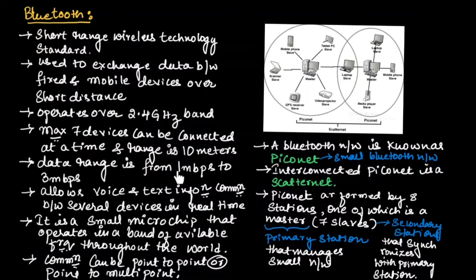The data rate of Bluetooth ranges from 1 Mbps to 3 Mbps. It allows voice and text information communication between several devices in real time. Bluetooth is a small microchip that operates in a band of available frequencies throughout the world. The communication can be point-to-point, meaning it communicates with a single device at a time, or point-to-multipoint, meaning it can communicate with multiple devices at a time.